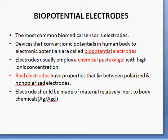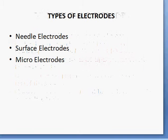Real electrodes' properties lie between polarized and non-polarized electrodes. The material used for the electrode is silver or silver chloride. These are the types of electrodes: needle, surface, and microelectrodes.